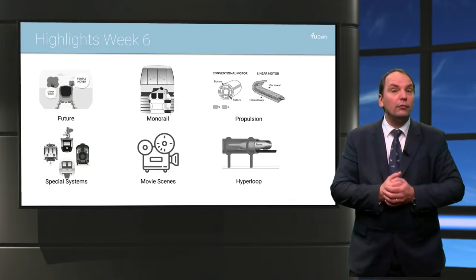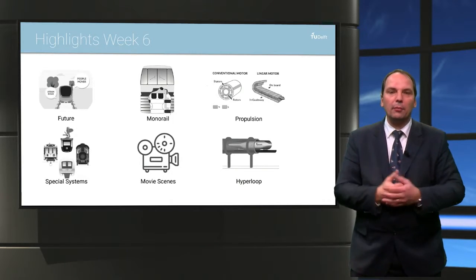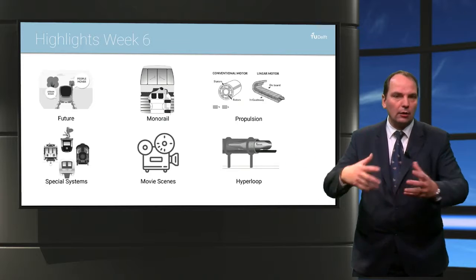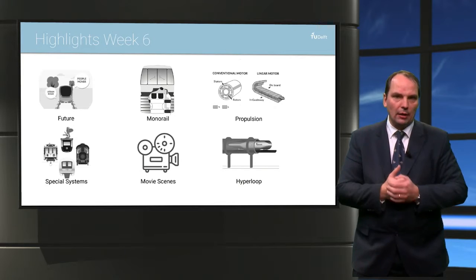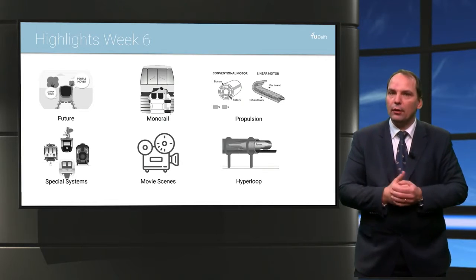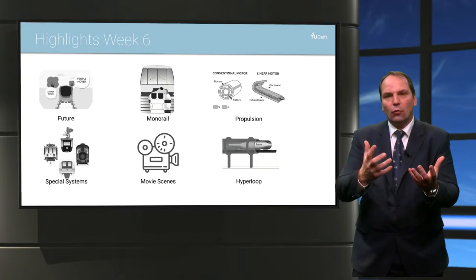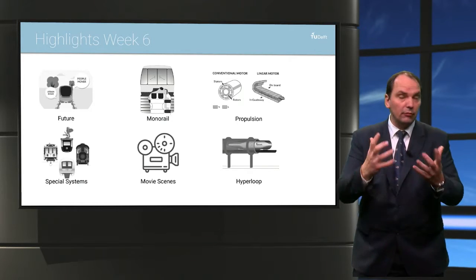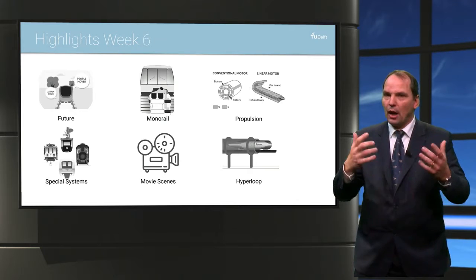Week six: we are looking ahead and looking at the future. We have special new systems already in development, and all kinds of cities and countries have their own ways of developing and exploring new forms of transport by train. In this MOOC we zoom in especially on monorail, because that is more or less the common thread you can see in all kinds of designs all over the world. And with monorail we can also discuss propulsion and traction, which is really different from the conventional railway business we have at the moment.